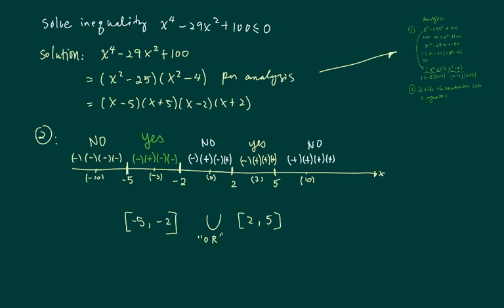Now notice in this equal sign, the bracket is square as if you can sit on it so you won't slip off. So the final solution is minus 5 to minus 2 inclusive. Or, there's a union sign, 2 to 5. That's the final solution.